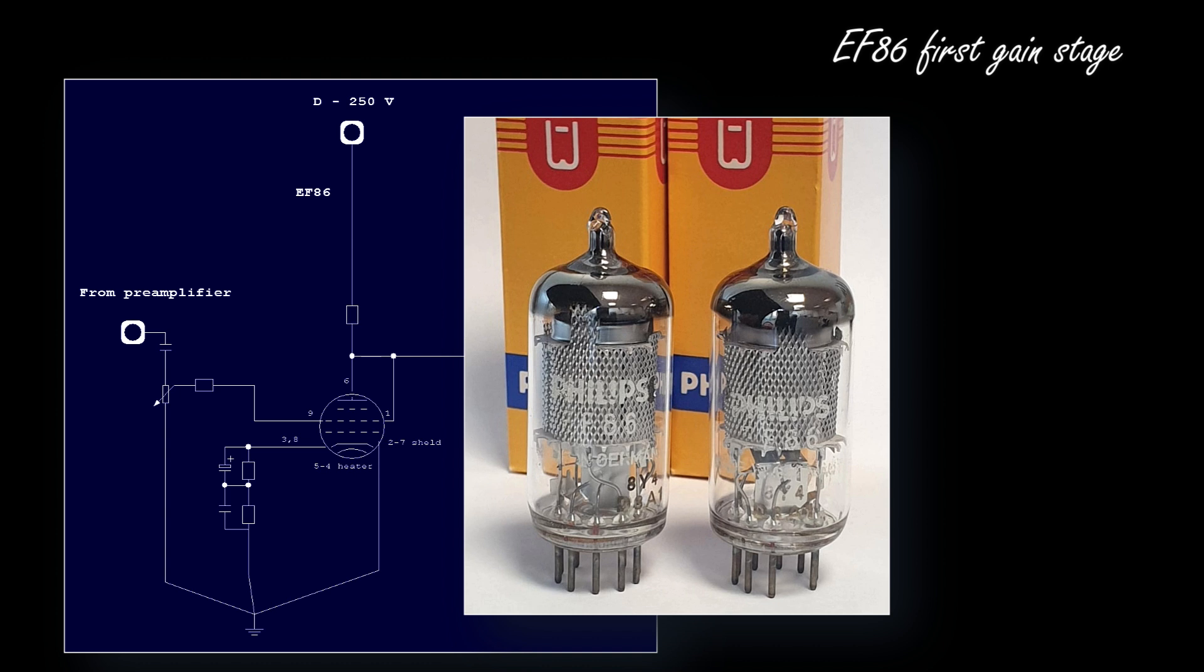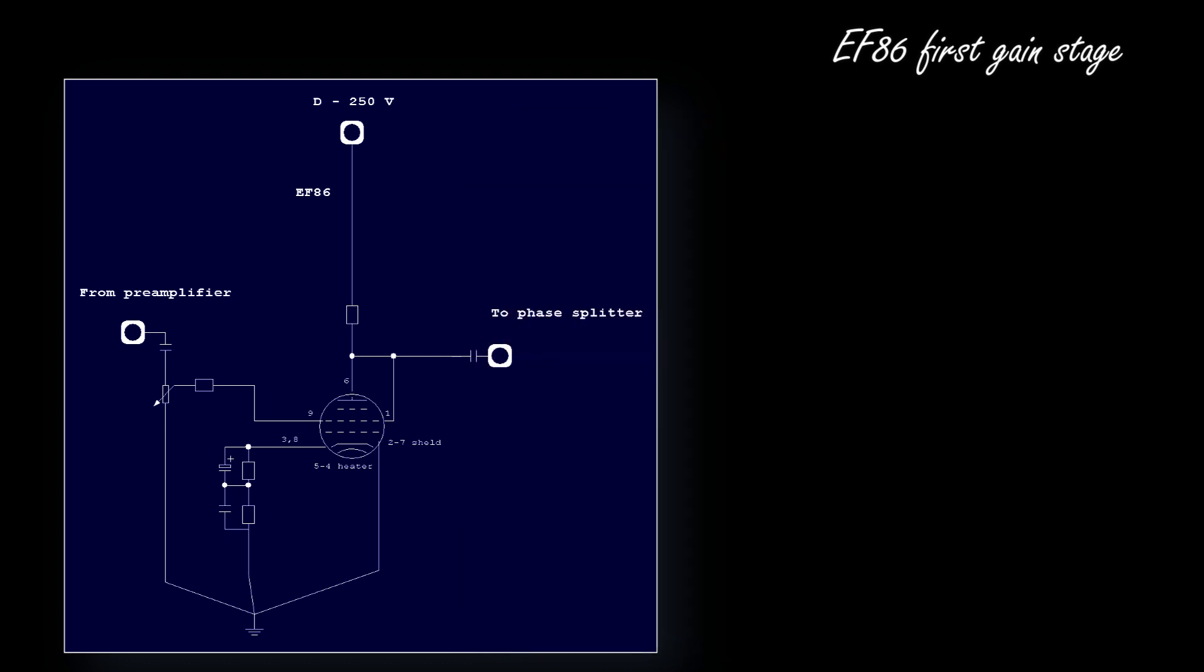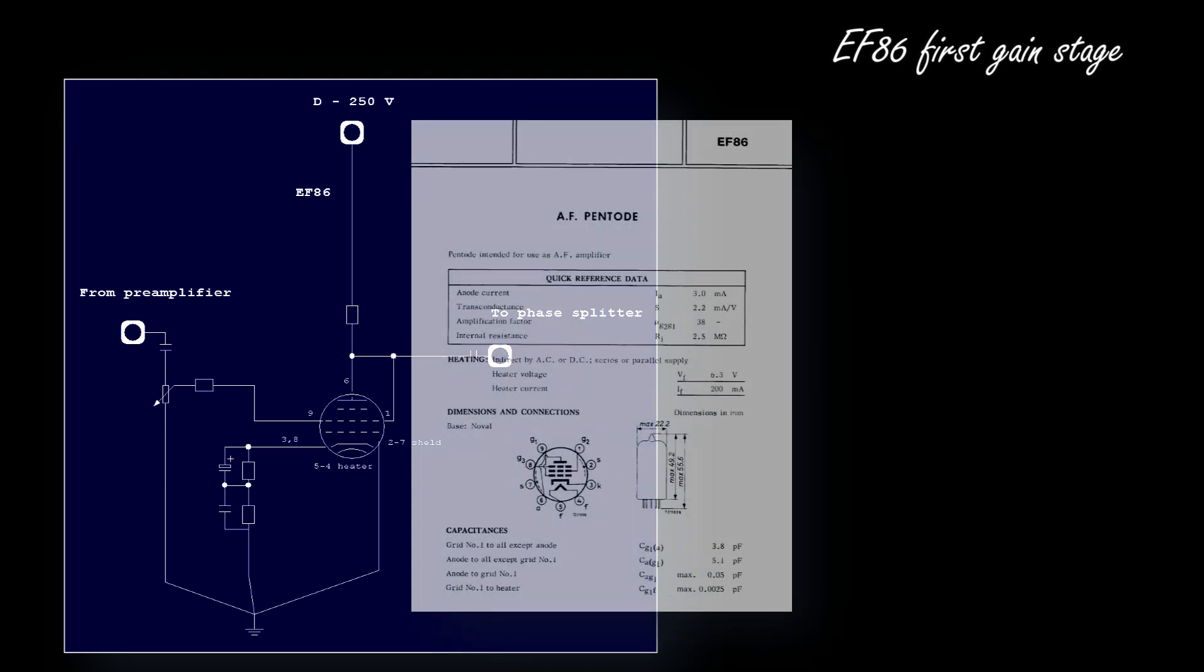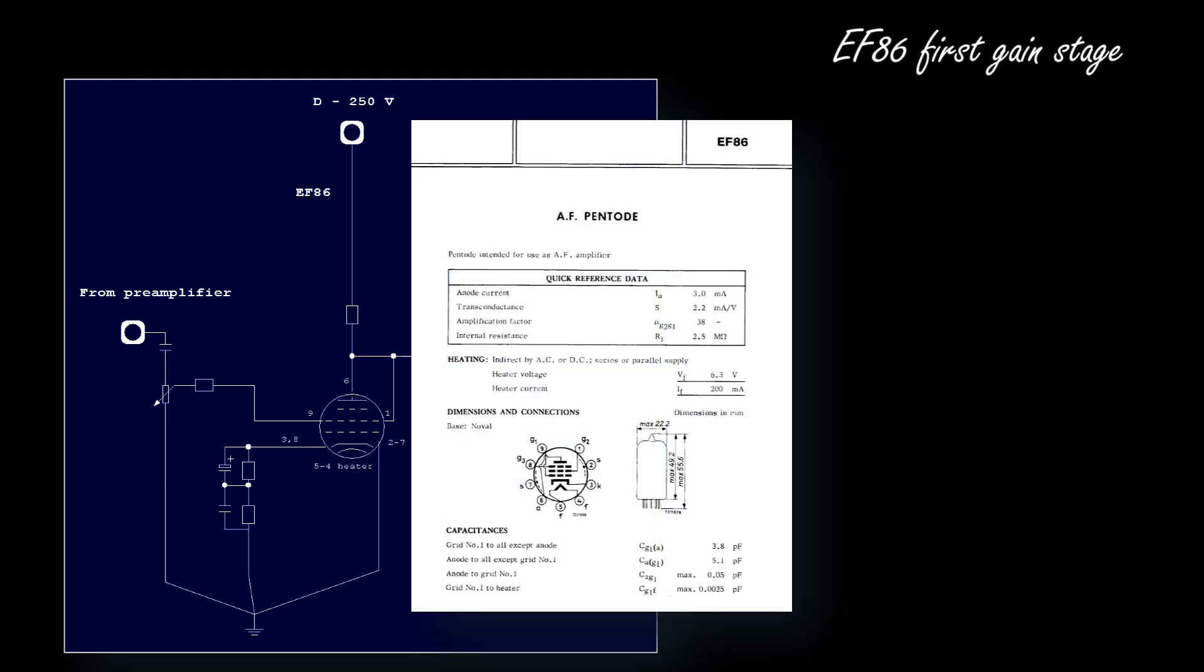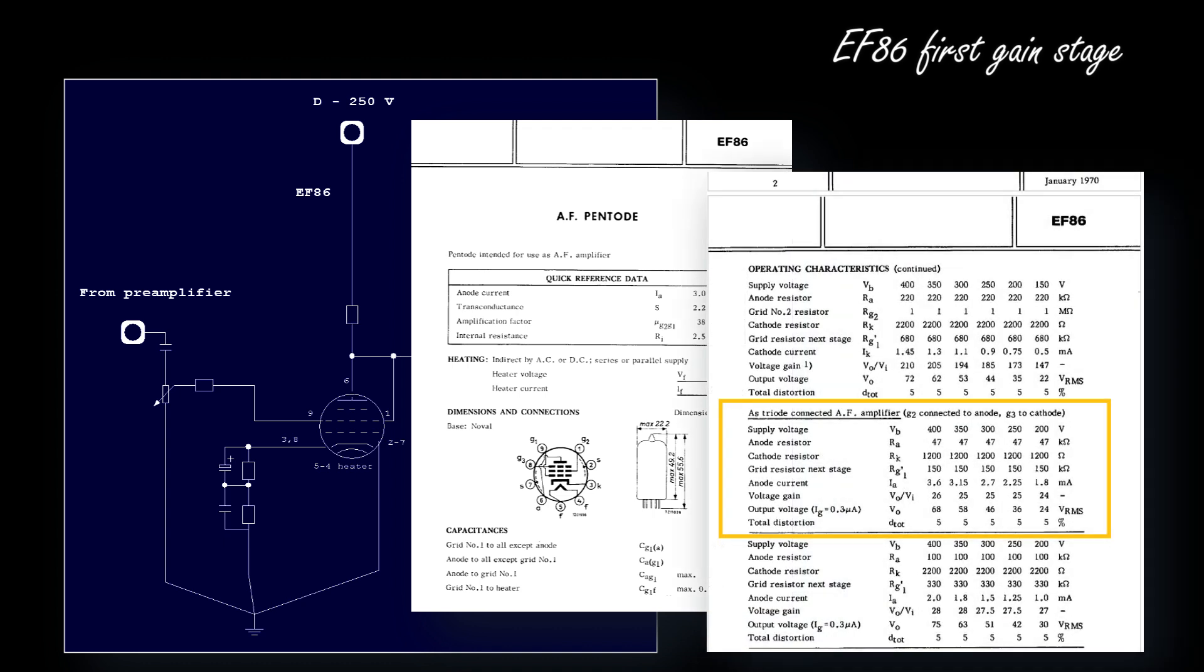Also, deploying this tube in triode mode lowers a little bit of the gain, which is very good, because otherwise we would have really too much gain for a power amplifier. Triode-strapped means that grid number two is directly connected to the tube's anode, and grid number three is directly connected to the cathode.